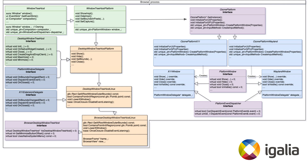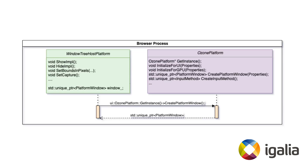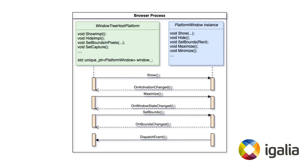X11 basically does the same. The PlatformWindow is instantiated by a single call to OzonePlatform — this happens in the browser process. Once Aura has initialized Ozone and created a PlatformWindow, it can interact with Ozone via the PlatformWindow interface. Ozone communicates back to Aura via the PlatformWindowDelegate interface, which I mentioned before. For example, Aura can ask Ozone to show the window, maximize it, set its bounds, and so on. In response, it will receive OnActivationChanged, OnWindowStateChanged, and other calls.